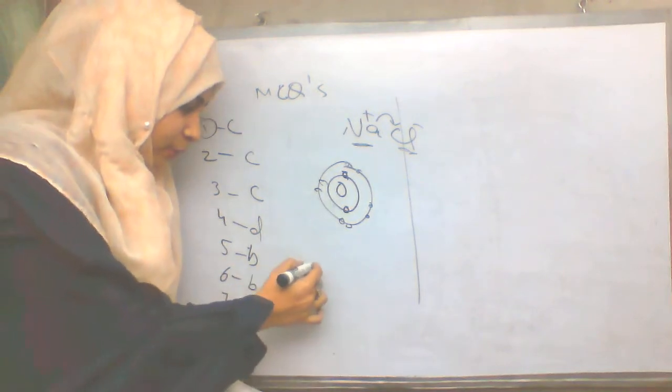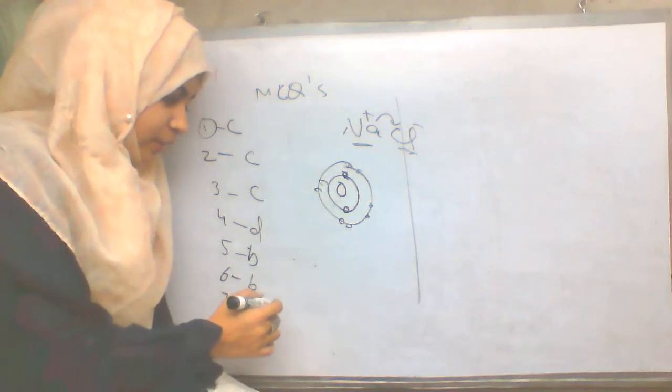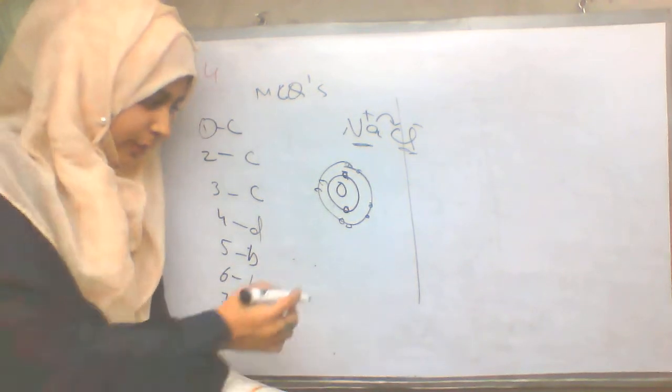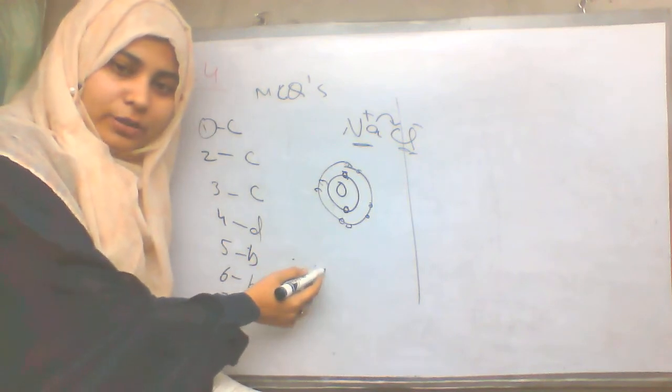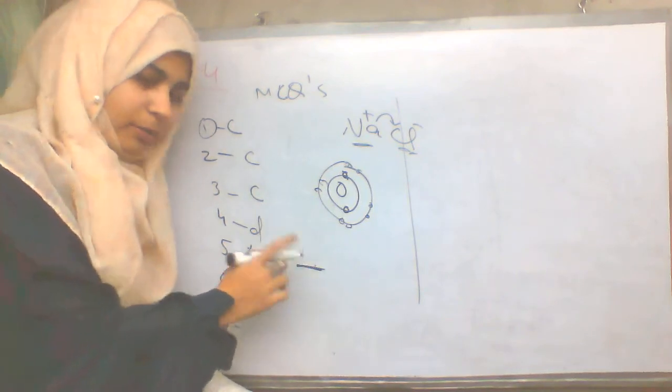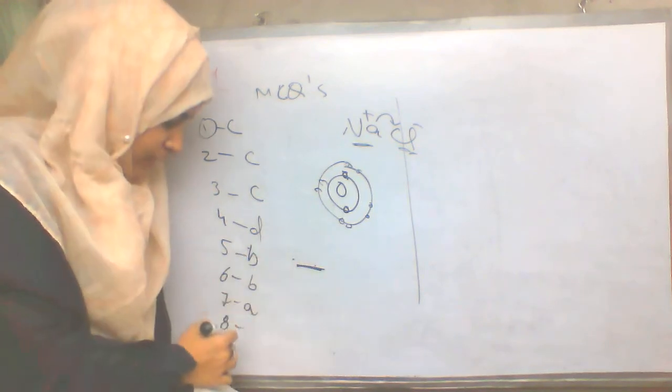Question 8: This is a bond pair. How many electrons will be in a bond pair? One electron comes from one particular atom and one electron from another particular atom. So in a bond pair there are two electrons.